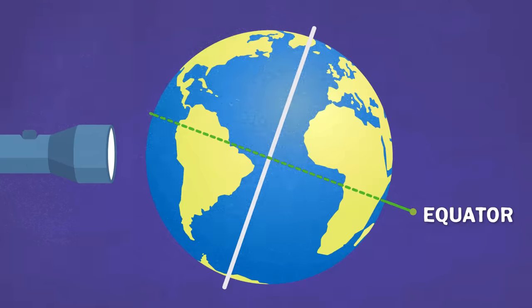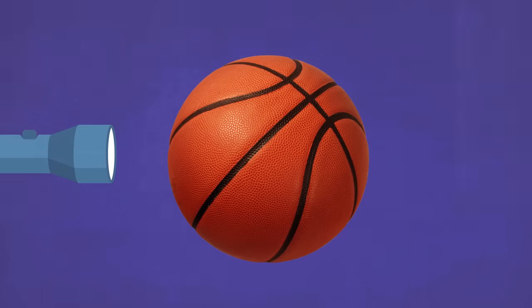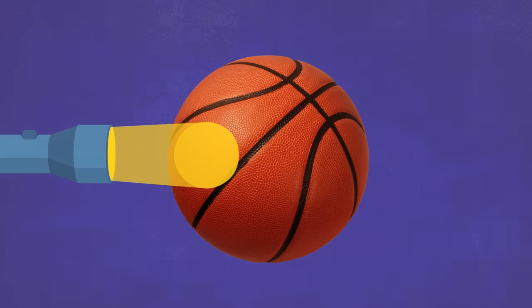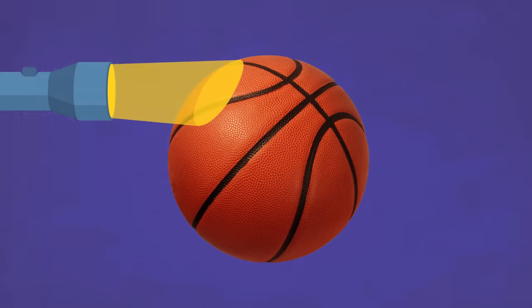Imagine shining a flashlight on a basketball. Near the middle, the light is a perfect circle. But as you move the flashlight up, it becomes more oblong. This unequal heating of the Earth's surface causes the difference in temperature.